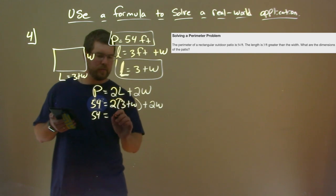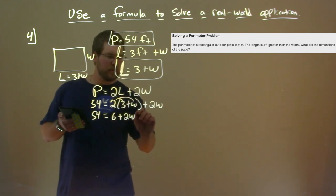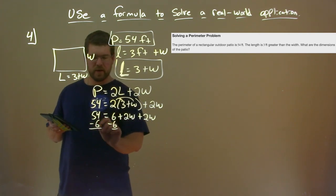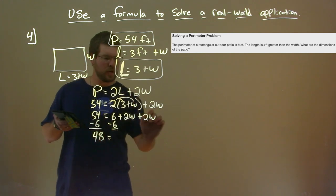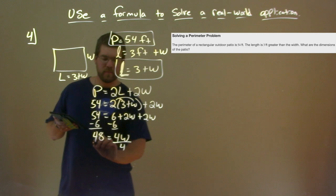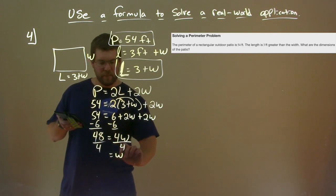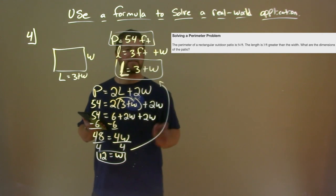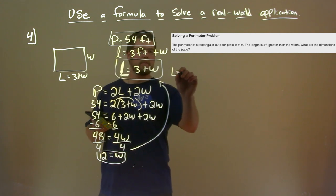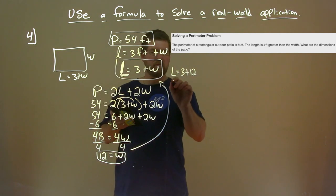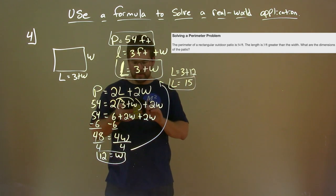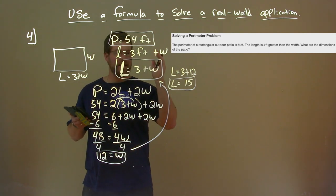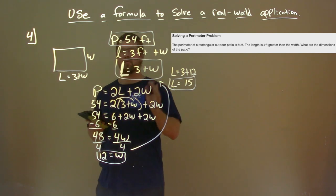54 stays. Distributing: 2 times 3 is 6, and 2 times W is 2W, plus 2W. Subtracting 6 from both sides: 54 minus 6 is 48. And 2W plus 2W is 4W. Dividing both sides by 4: W equals 12. To find the length, we plug into our formula: L equals 3 plus 12, which is 15. So the patio has a length of 15 feet and a width of 12 feet, giving a perimeter of 54 feet.